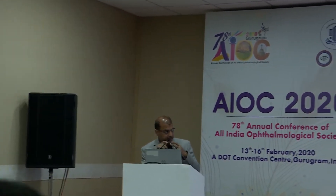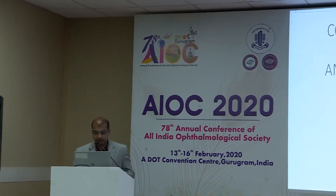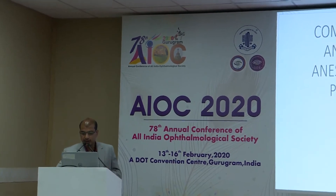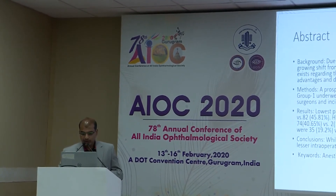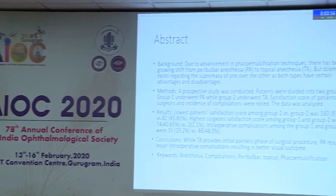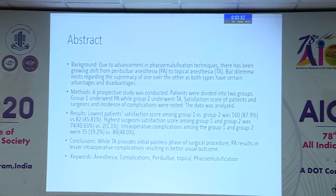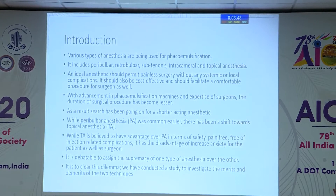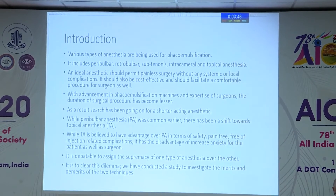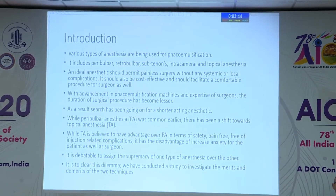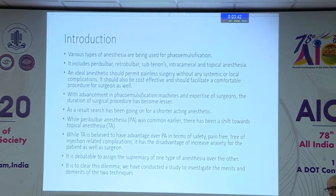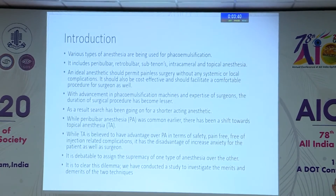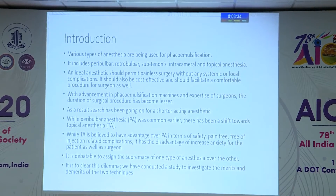Good morning judges, dear friends and colleagues. I will be speaking on phacoemulsification with two methods: peribulbar anesthesia or topical anesthesia. Various types of anesthesia have been used in phacoemulsification, right from peribulbar, retrobulbar, sub-Tenon's, intracameral, and topical. The ideal aim should be a painless surgery without any systemic or local complications.